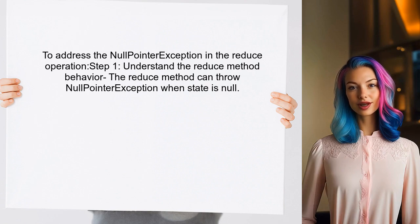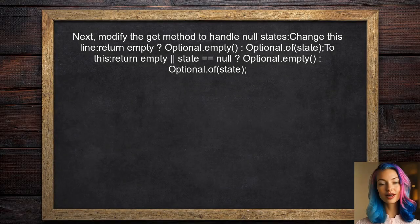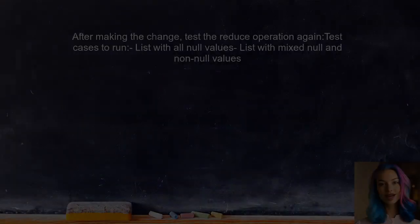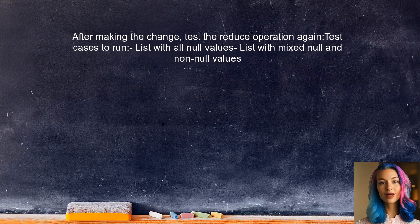The user can modify the get method in the reducing sink class. Next, the user should change the get method to handle null states properly. This involves adding a condition to check if the state is null before returning it as an Optional. After making this change, the user should test the reduce operation again with the same test cases. This will help confirm that the null pointer exception no longer occurs.